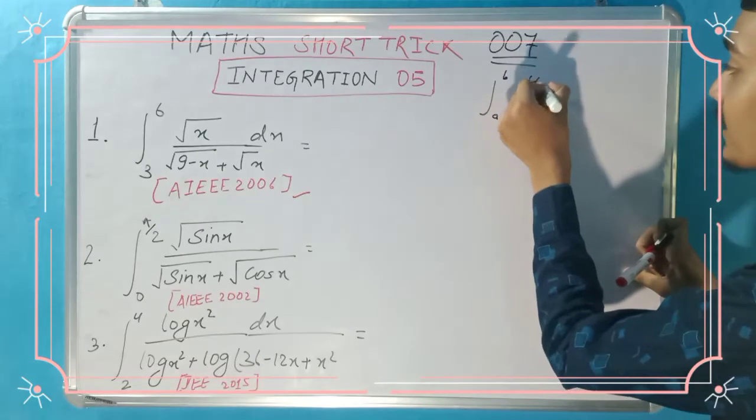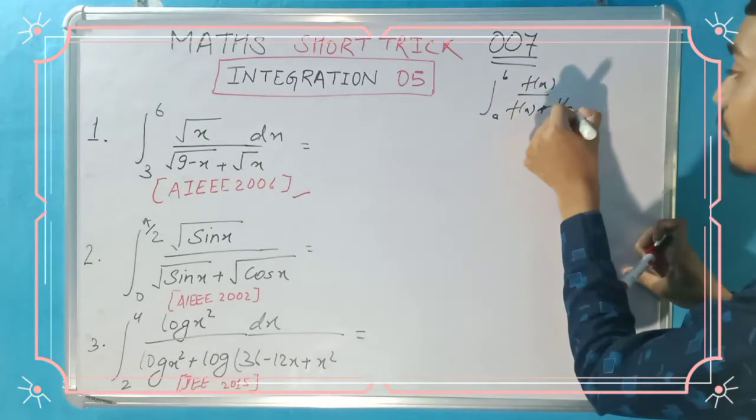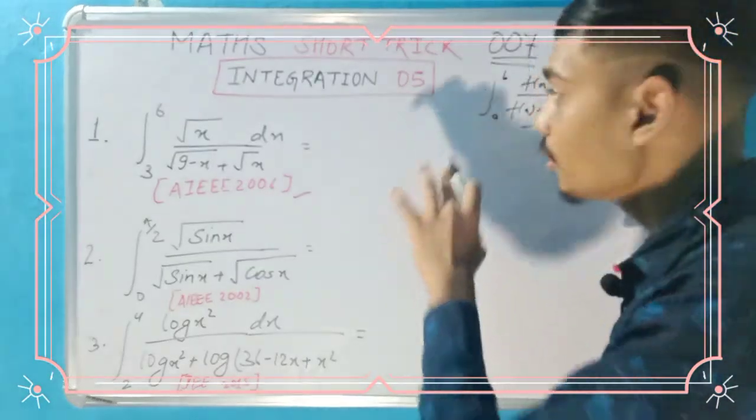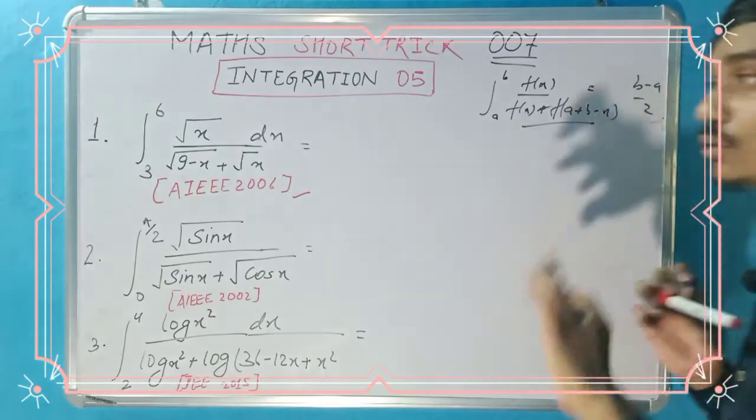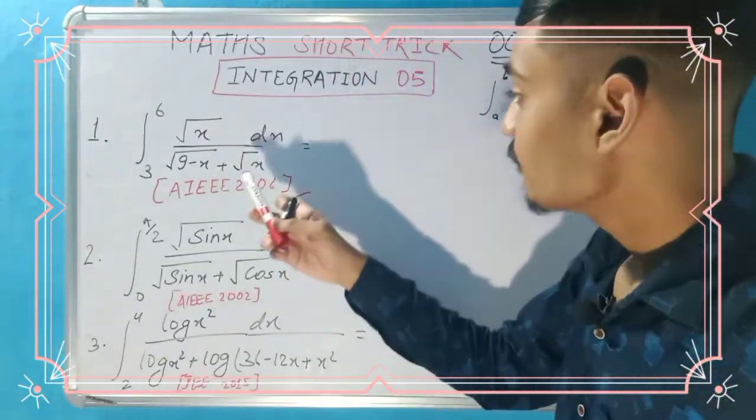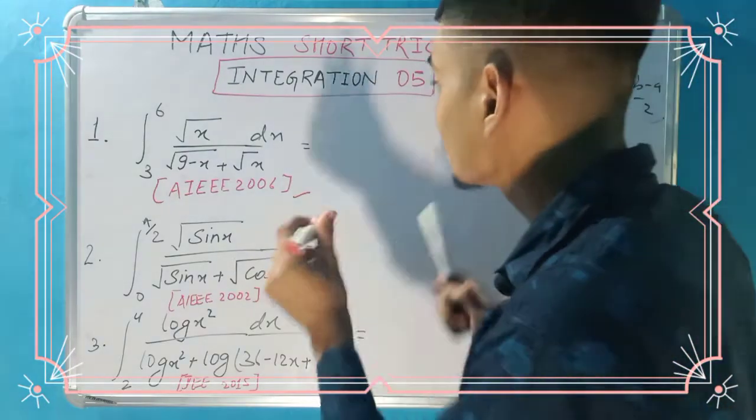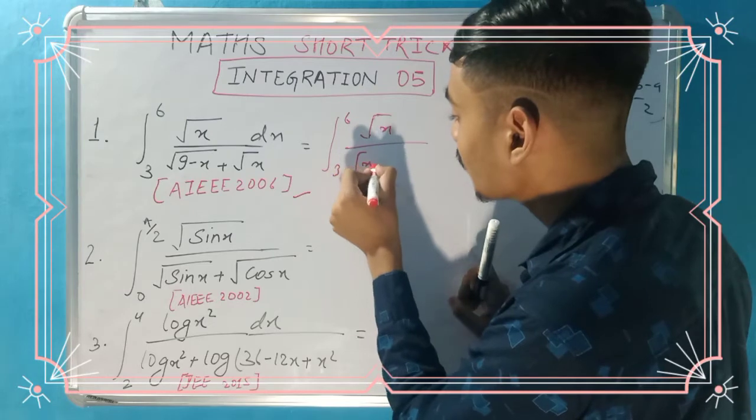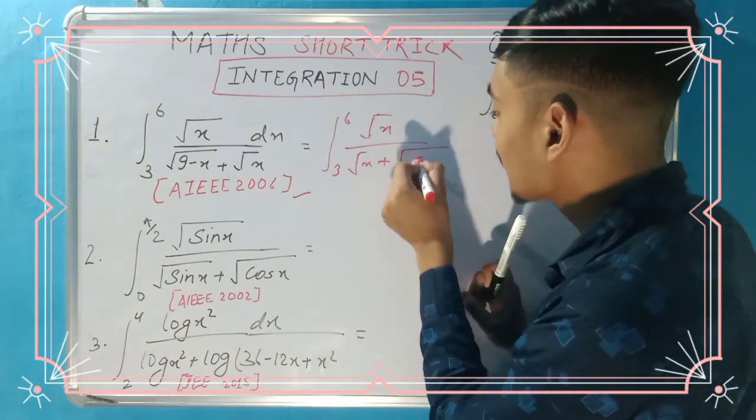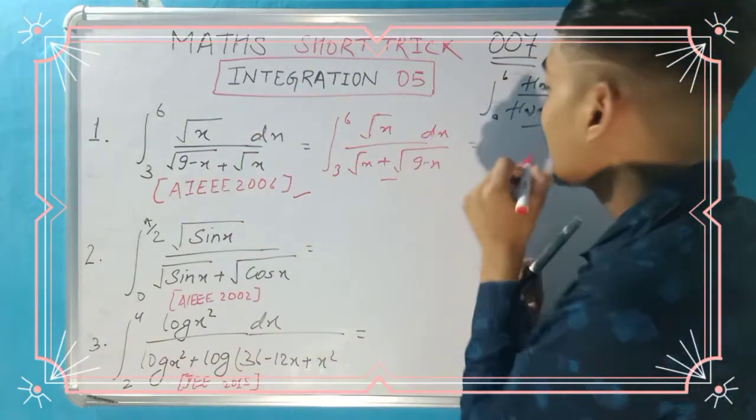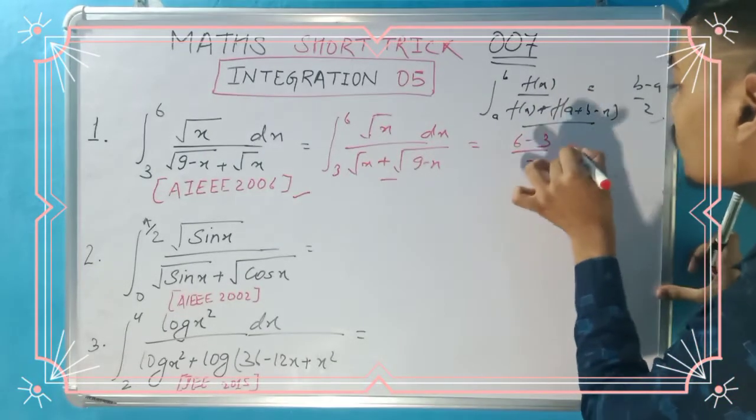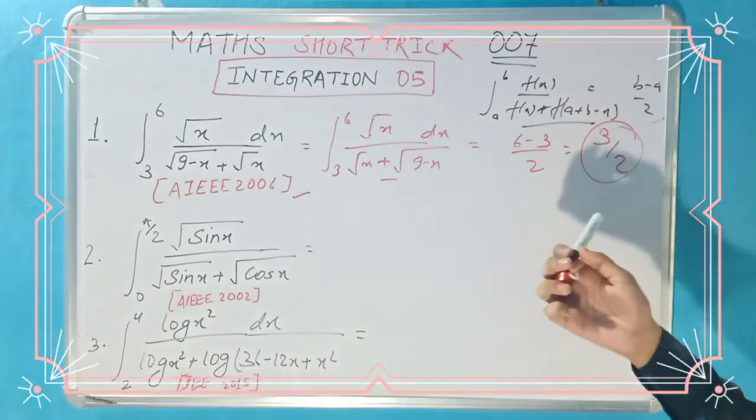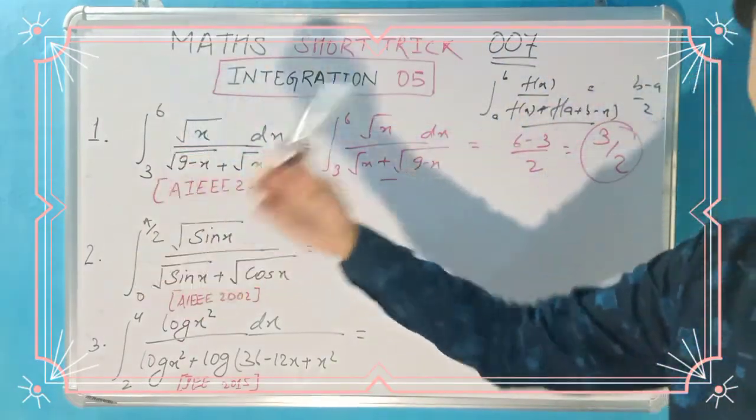The formula is a to b: f(x) divided by f(x) plus f(a+b-x) equals (b-a)/2. We have to see this question in this format. From 3 to 6, this is root x. If we call f(x), then here we have f(x) and here we have 6+3, that is 9 minus x. So we can easily write our answer as 6 minus 3 by 2, that is 3/2. See how simple it is. If you know the format and understand the format, then the answer is 6 minus 3 by 2, that is 3/2.